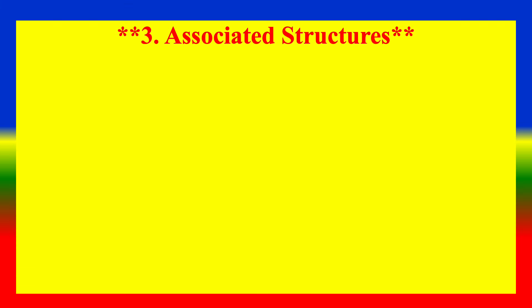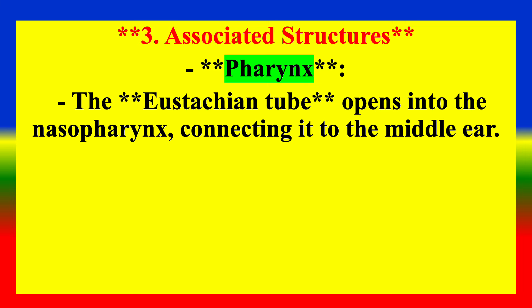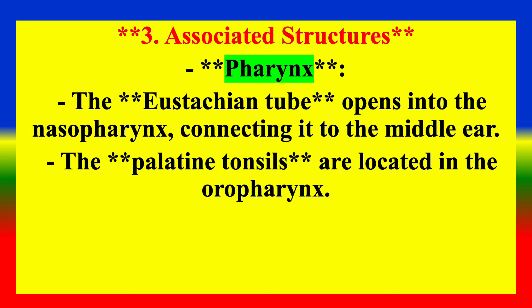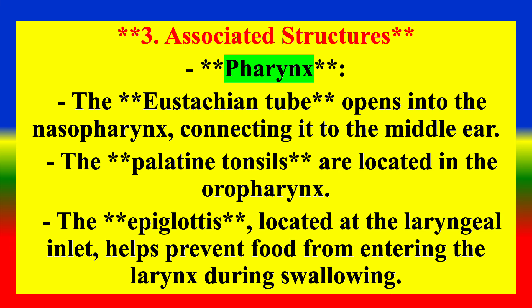Associated Structures — Pharynx: The Eustachian tube opens into the nasopharynx and is connected to the middle ear. The palatine tonsils are located in the oropharynx. The epiglottis, located at the laryngeal inlet, helps prevent food from entering the larynx during swallowing.